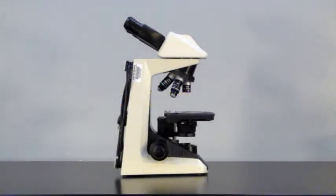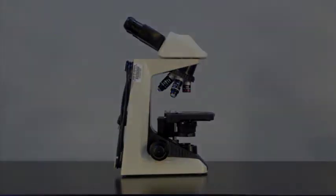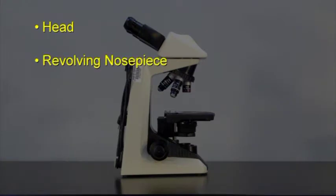The major structures on the microscope include the head, revolving nose piece, arm, mechanical stage, and base.